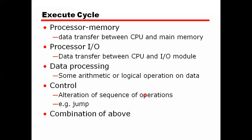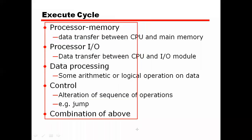The second important part is execution. Types of execution include: processor-to-memory data transfers between the CPU and main memory; processor-to-I/O data transfers between the CPU and the I/O module; data processing — arithmetic or logical operations on data; and control operations on the sequence of operations. A specific instruction may also be a combination of these four types.